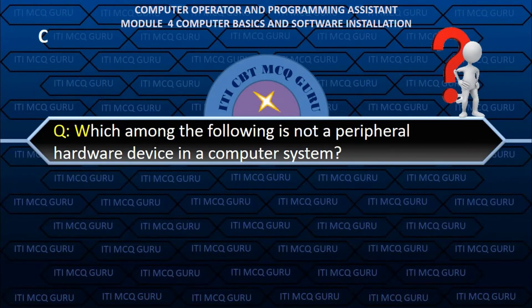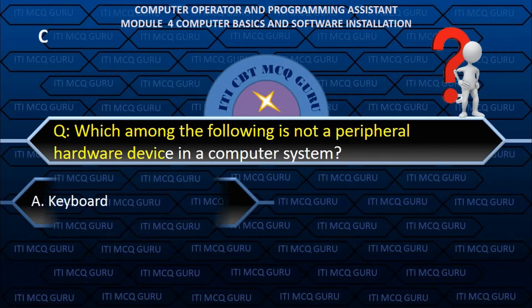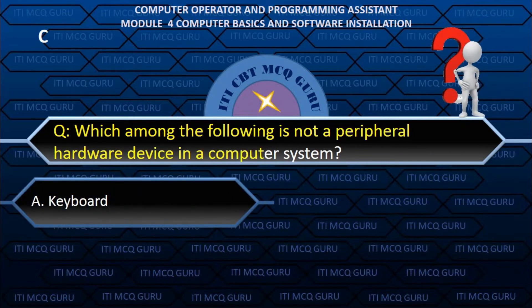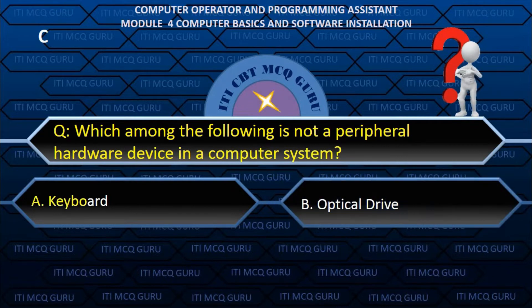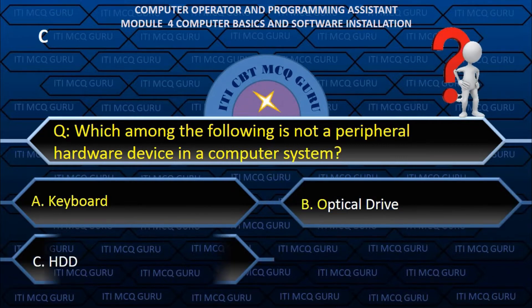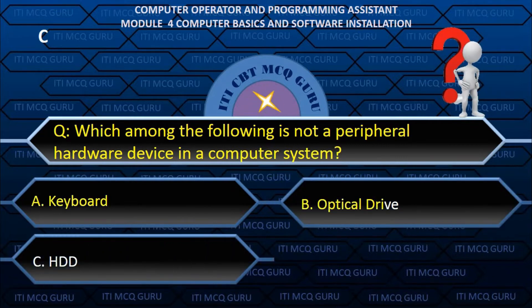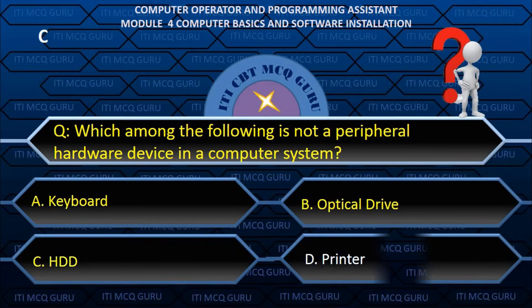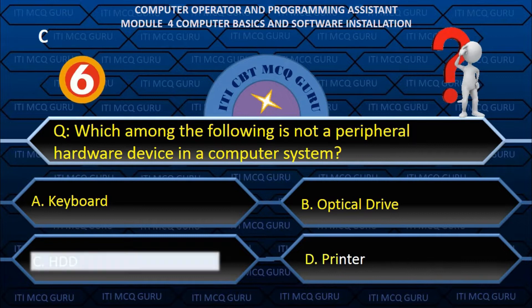Which among the following is not a peripheral hardware device in a computer system? — C. HDD.